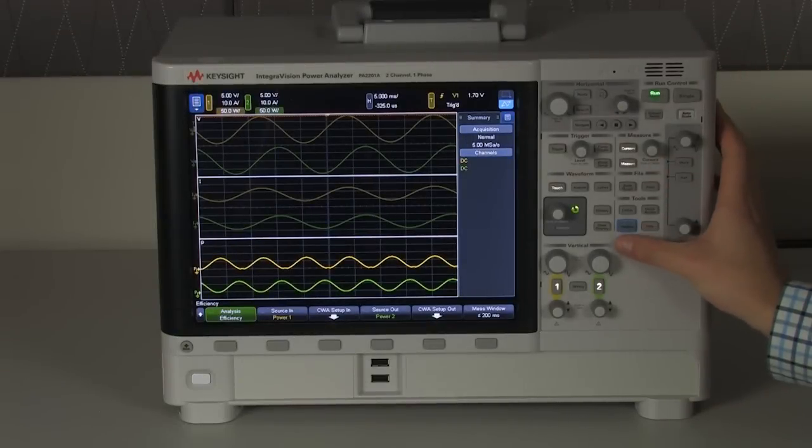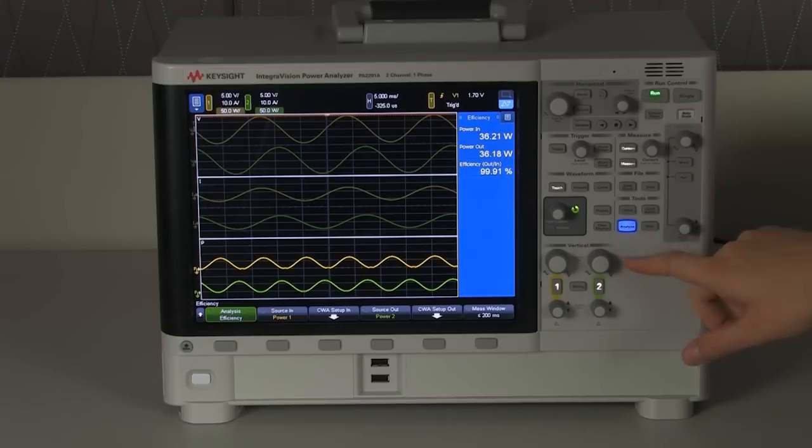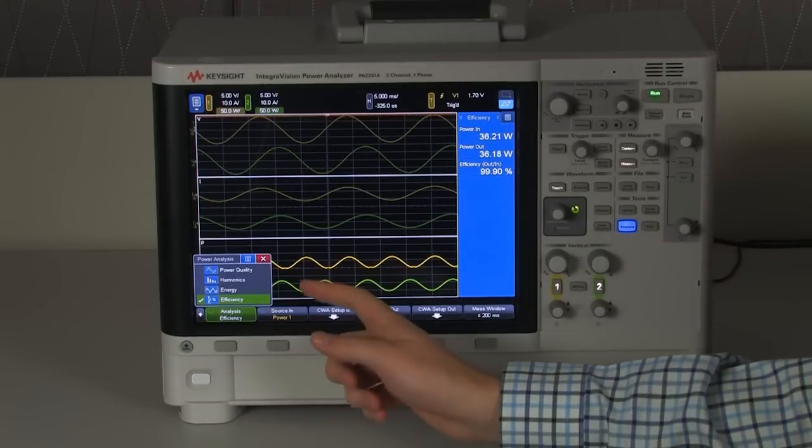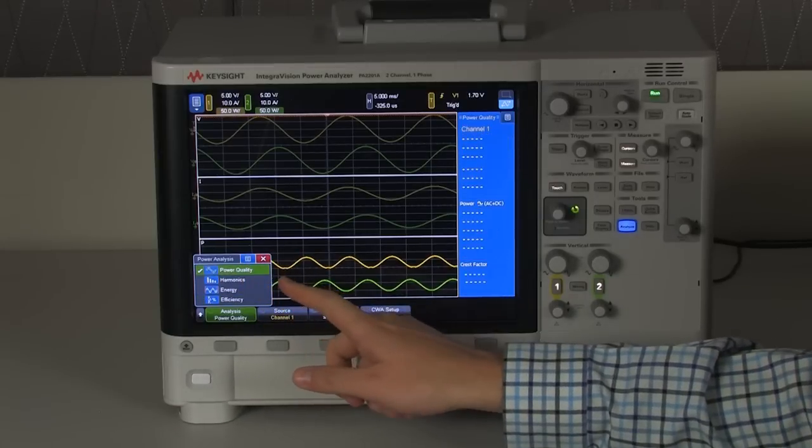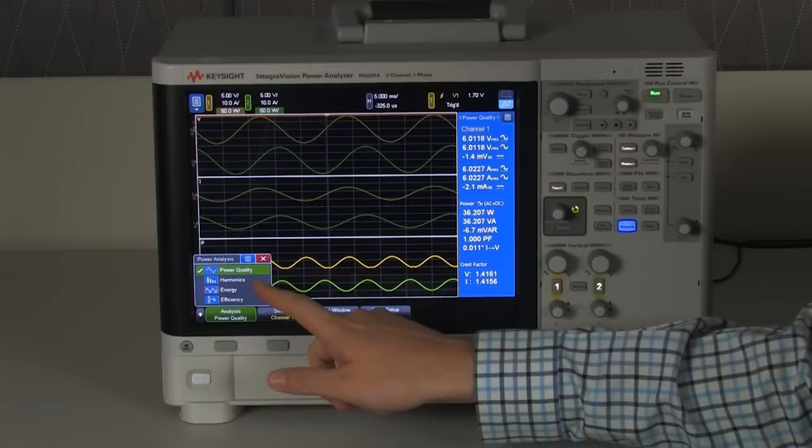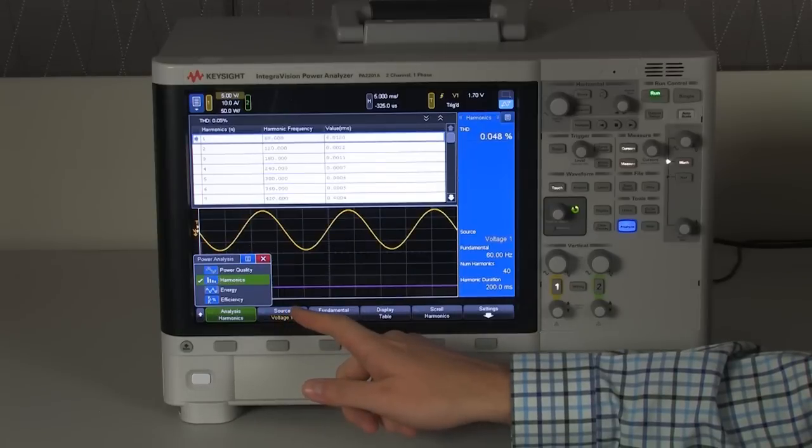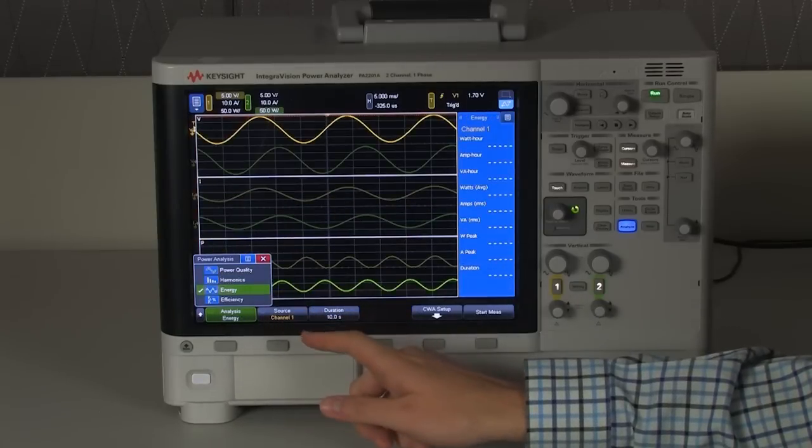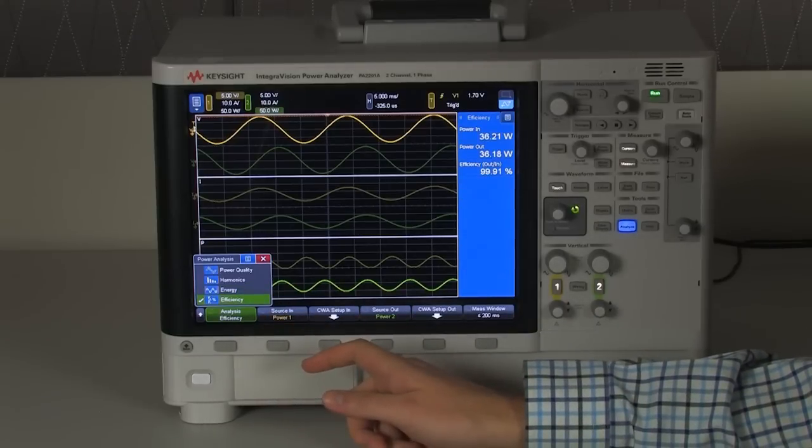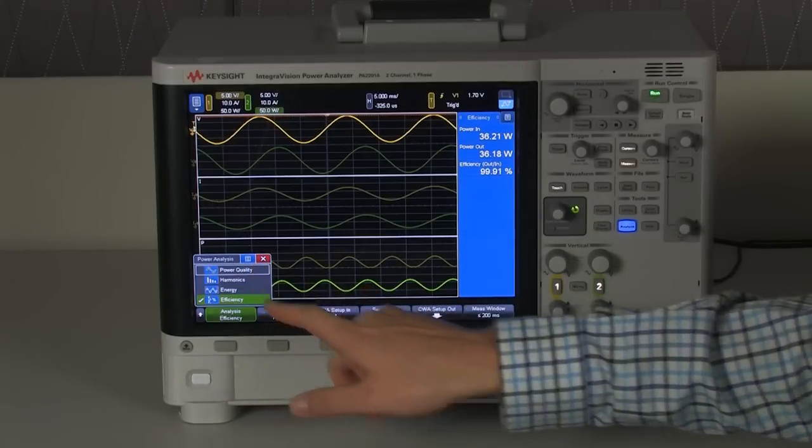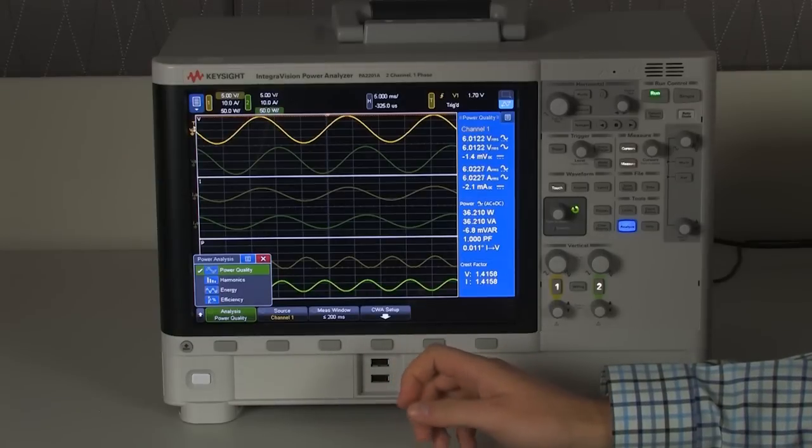So, now we're going to talk about the continuous whole cycle analysis mode of the IntegraVision Power Analyzer. So, if I go into the CWA mode, we have four different major categories of stuff we can measure. We can get basic power quality measurements on our waveforms. We can measure harmonics of our waveforms. We can measure energy over time of our waveforms. And we can also measure the real-time efficiency.